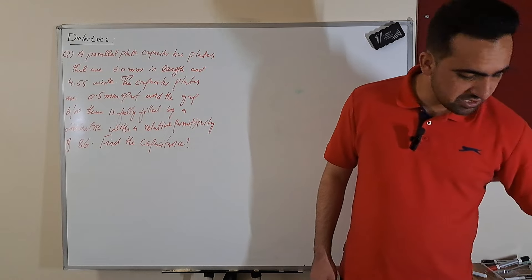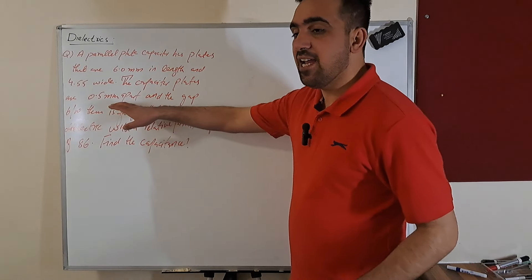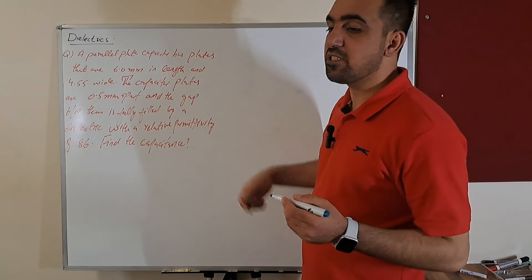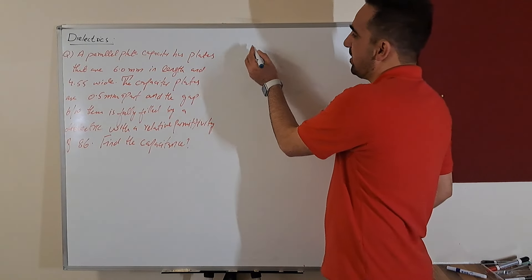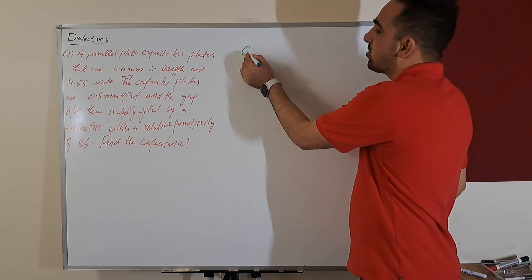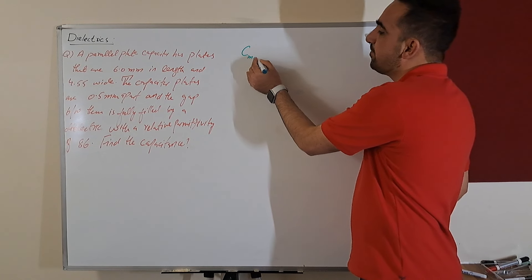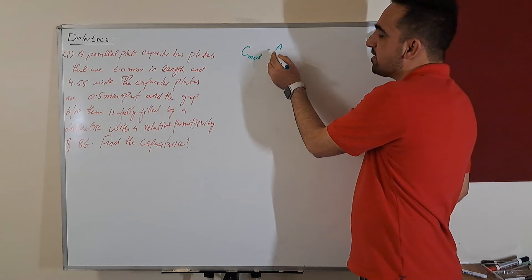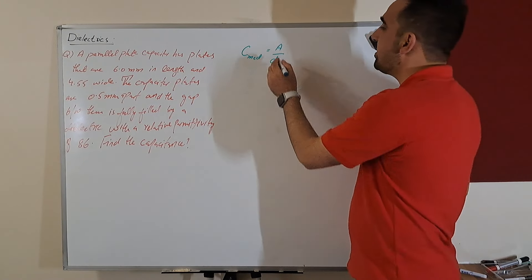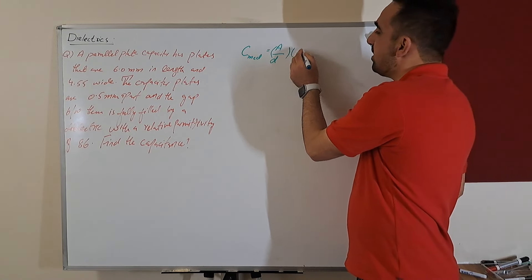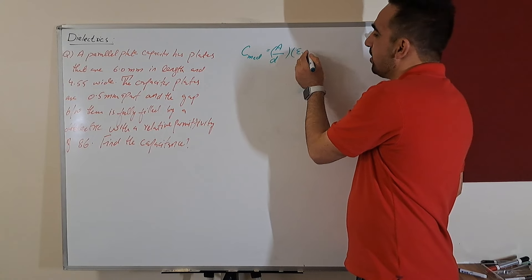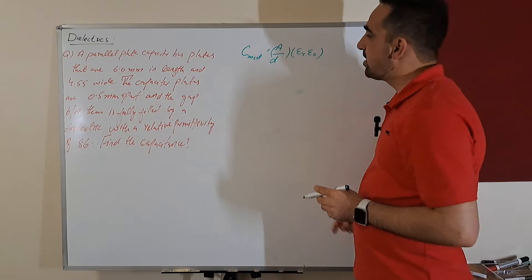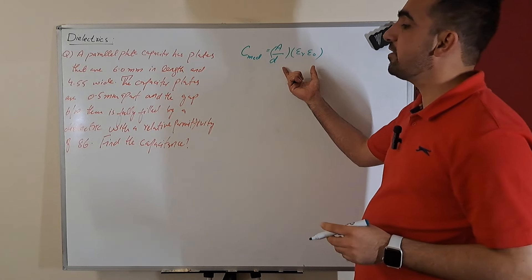Because we have a capacitor with a dielectric between the plates, we are using the capacitor formula for a capacitor with a dielectric. Capacitance with a medium is equal to the area of the plates divided by the distance between the plates, multiplied by relative permittivity and the permittivity of free space. This is the formula we are going to use.